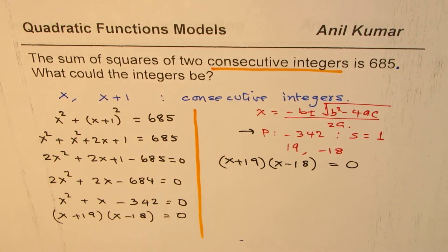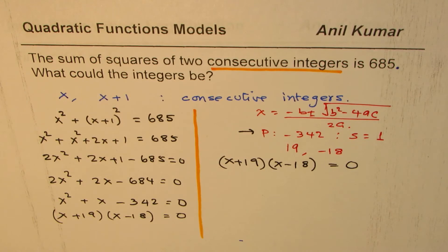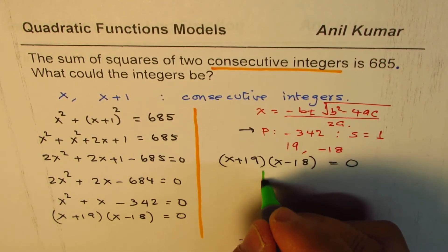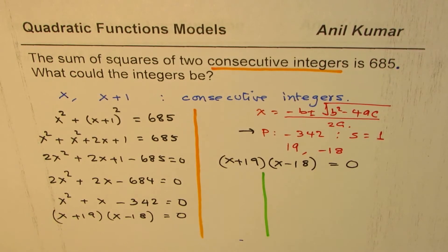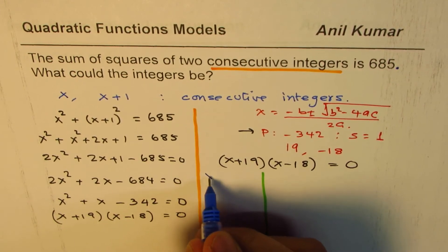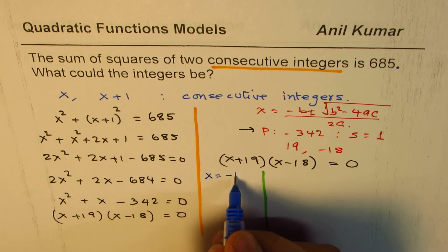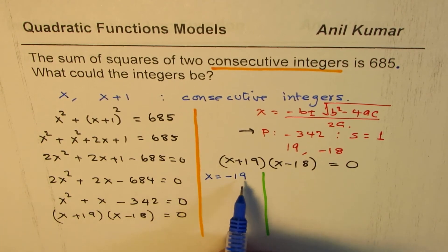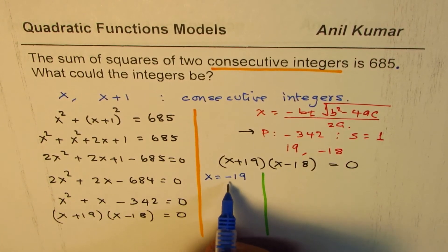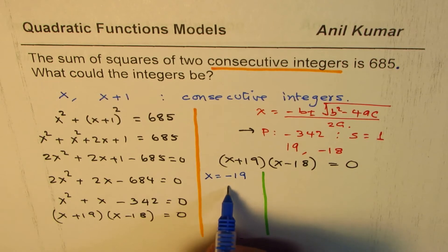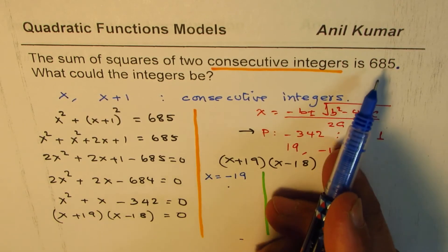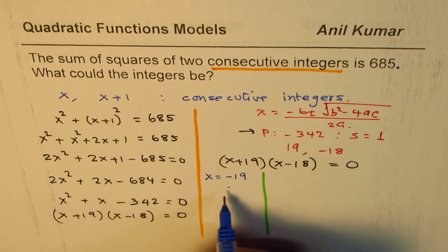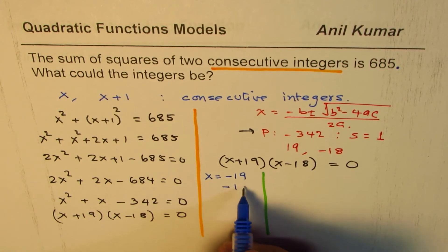What could the integers be? Now integers could be negative or positive. Let's find all possible solutions. So let's begin by taking x equals to minus 19. Then the consecutive number will be the other one—we need positive results, so both same signs—so minus 18.